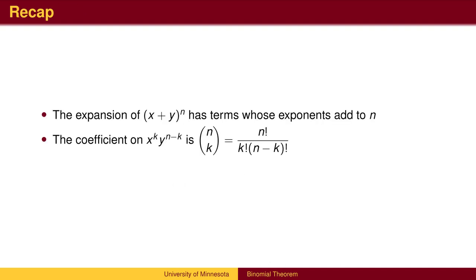To recap, the expansion of x plus y to the n has terms whose exponents add to n. It begins with x to the n, the powers on x are reduced by 1 in each step, and the powers on y increase by 1 until reaching y to the n. The coefficients can be calculated from the factorial formula or read directly from Pascal's triangle.